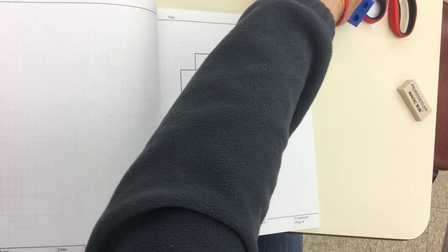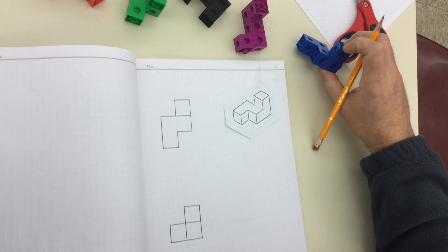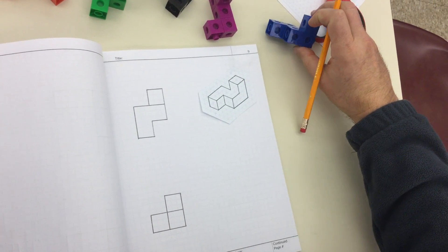Now we're going to draw from this side what it looks like from this side. Again, an L shape, but a little bit different.